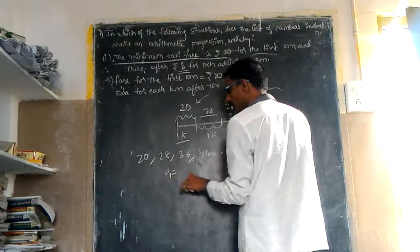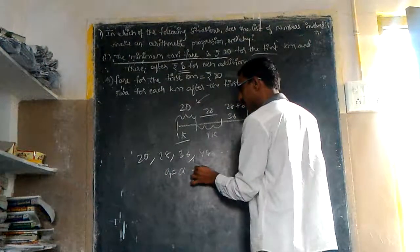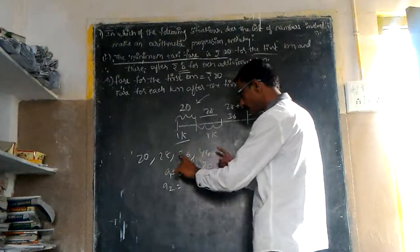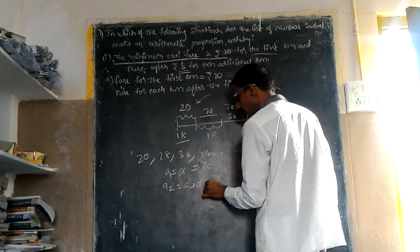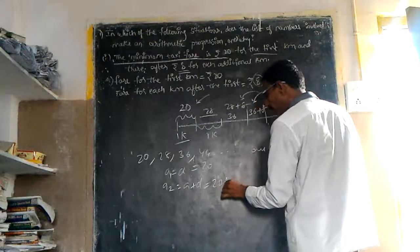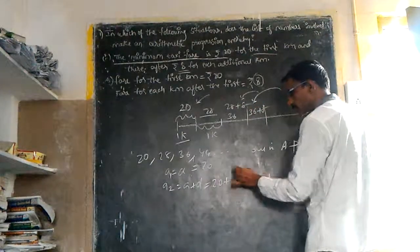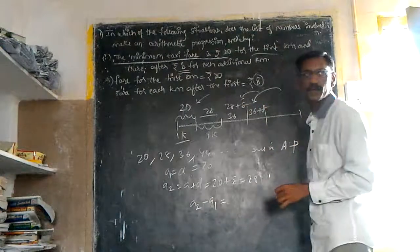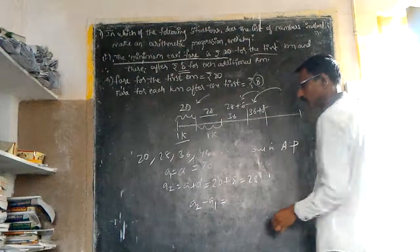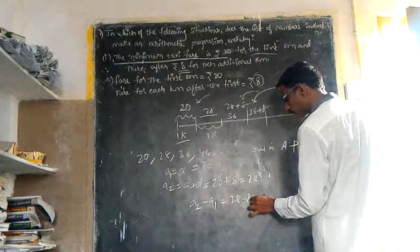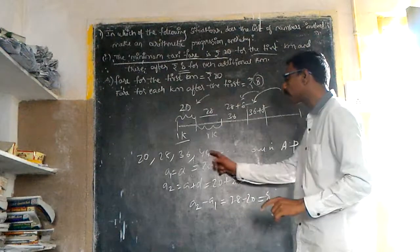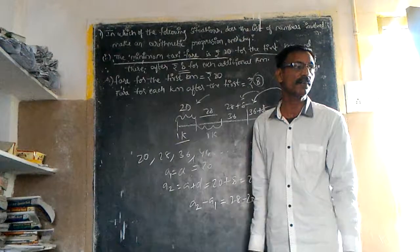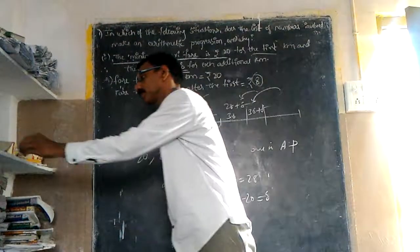So first term, A1, is also called A, that equals 20. A2 equals A plus D, that means 20 plus 8 gives 28. So you take A2 minus A1, that also gives the common difference. 28 minus 20, that equals 8. Even if you take the difference between these two, we get 8, because the common difference is 8.